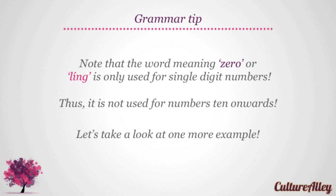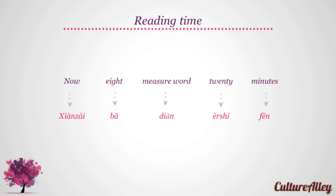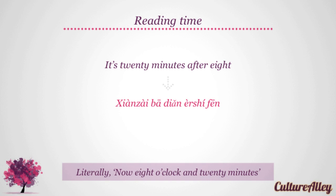Note that the word meaning zero, or ling, is only used for single digit numbers. Thus, it is not used for numbers ten onwards. For example: now = xiàn zài, eight = bā, measure word = diǎn, twenty = er shí, minutes = fēn. So it's twenty minutes after eight is translated as xiàn zài bā diǎn er shí fēn, literally meaning 'now eight o'clock, twenty minutes'. Note that twenty is not a single digit number, so we need not add zero or ling before it.